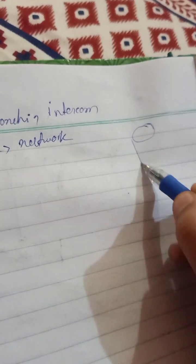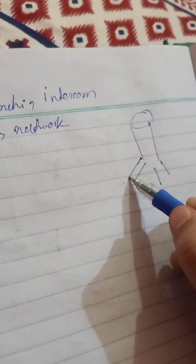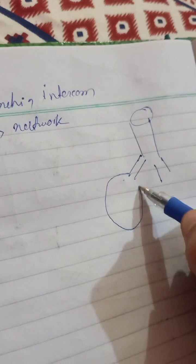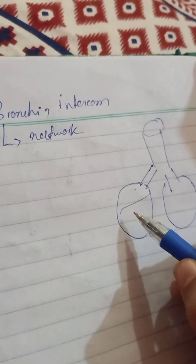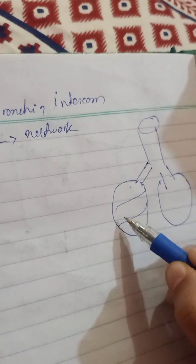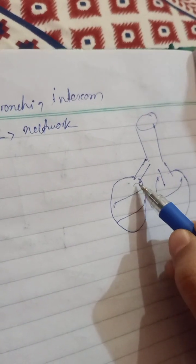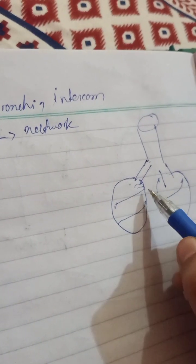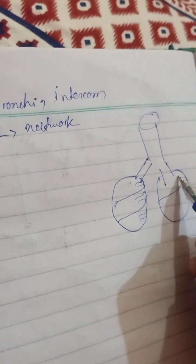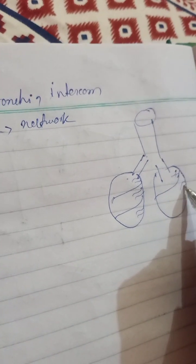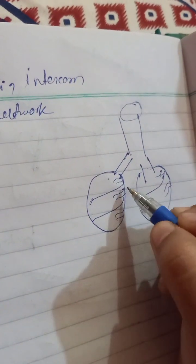This is the trachea, this is the primary bronchi, and these are the lungs. In the lobes area, this one is the primary bronchi and this is the secondary bronchi. The secondary bronchi depend upon the lobes.